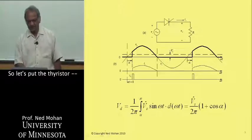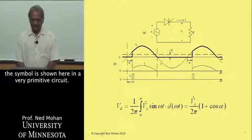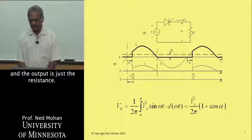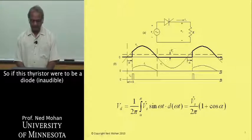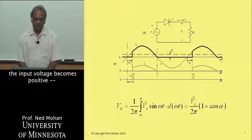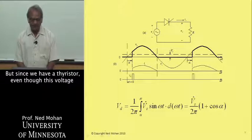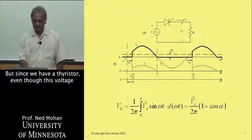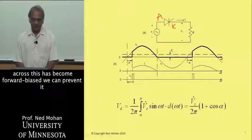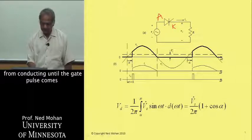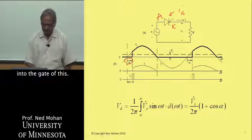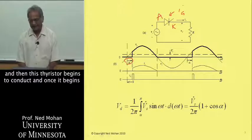Let's put a thyristor — the symbol is shown here — in a very primitive circuit. The input is a sinusoidal AC voltage, and the output is just a resistance. If this thyristor were to be a diode, as soon as the input voltage becomes positive, current would begin to flow. But since we have a thyristor, even though the voltage across the thyristor has become forward biased — anode here and cathode here — we can prevent it from conducting until the gate pulse comes at angle alpha. This gate pulse is the current I_g flowing into the gate. We just need to supply a pulse of this current, and then the thyristor begins to conduct.